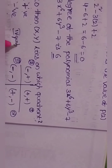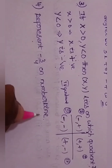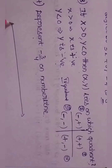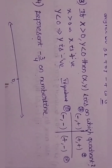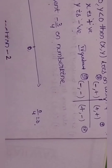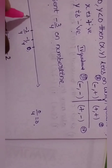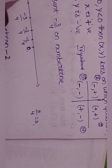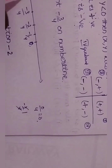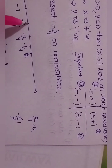Fourth question: represent minus 3 by 4 on the number line. On the number line, we mark 0, then minus 1 by 4, minus 2 by 4, minus 3 by 4, and minus 4 by 4 equals minus 1. The point minus 3 by 4 is represented on the number line.